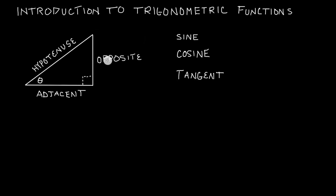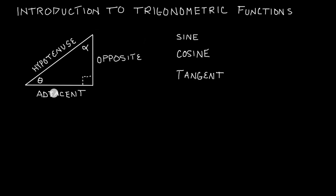The opposite and adjacent sides of the triangle really depend on what angle we're looking at. If we're looking at the angle theta that I've drawn here, then the opposite side of this angle is right over here — this is the opposite side of theta. The adjacent side is the side of the triangle that borders the angle theta. For example, if I was to have a second angle up here, which I'll just call alpha, then according to alpha, this side down here is now the opposite side, and this side that borders alpha would be the adjacent side. But for this tutorial, let's just go ahead and stick with theta.